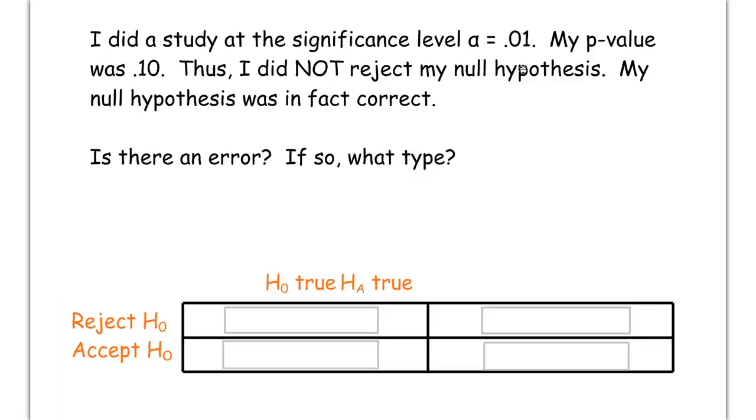Last one. I did a study at significance level alpha is 0.01. My p-value is 0.10. So, I did not reject. My null was, in fact, correct. So, the null was, in fact, true. We did not reject. That would be a good decision. That would be a correct decision here. And, that's all for looking at type 1 and type 2 errors.